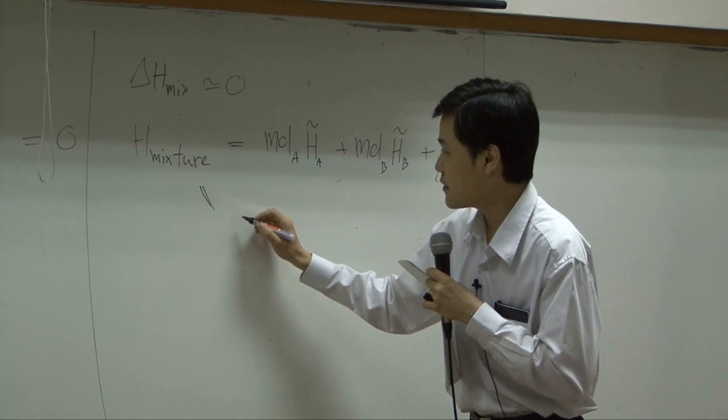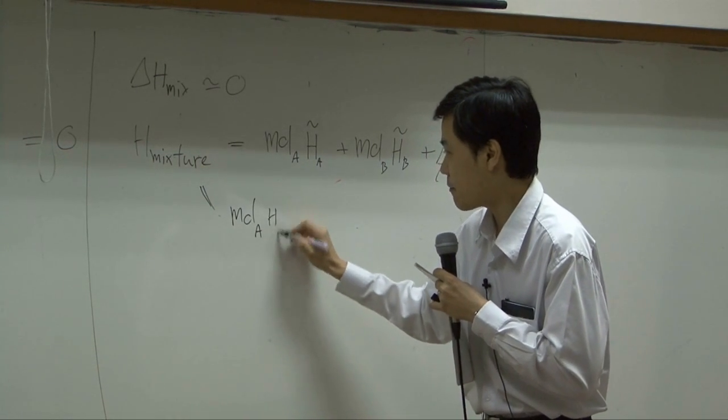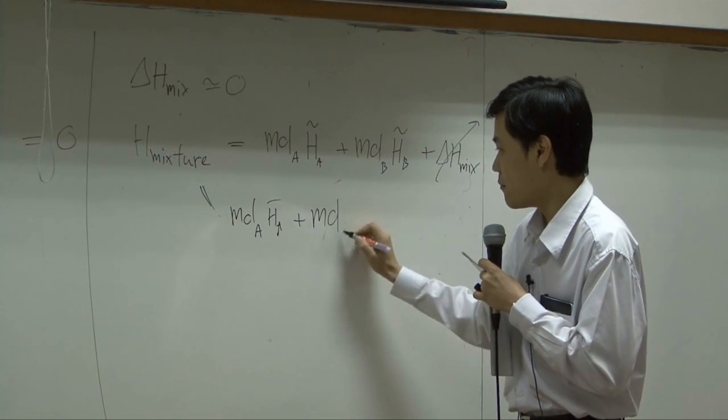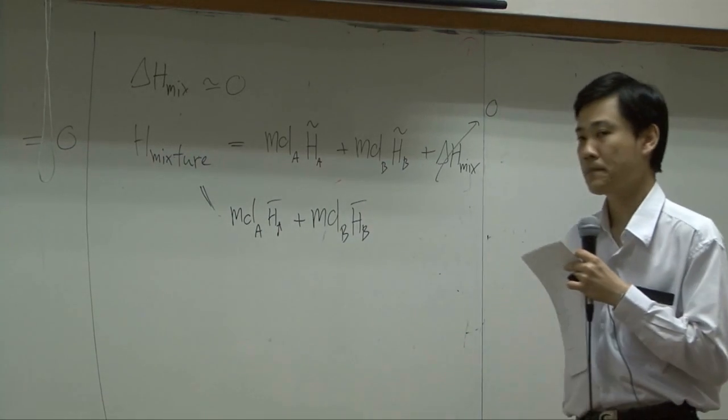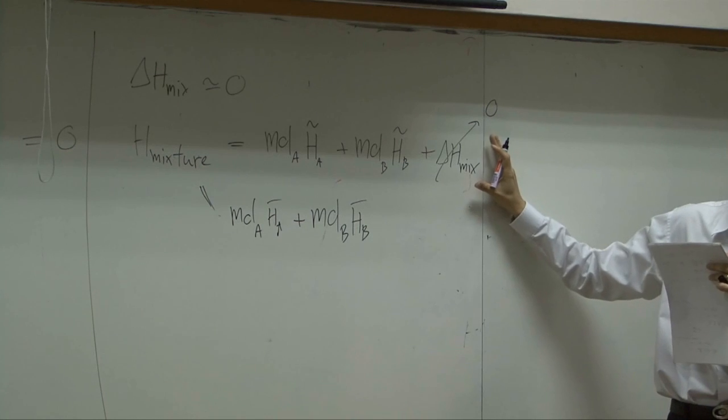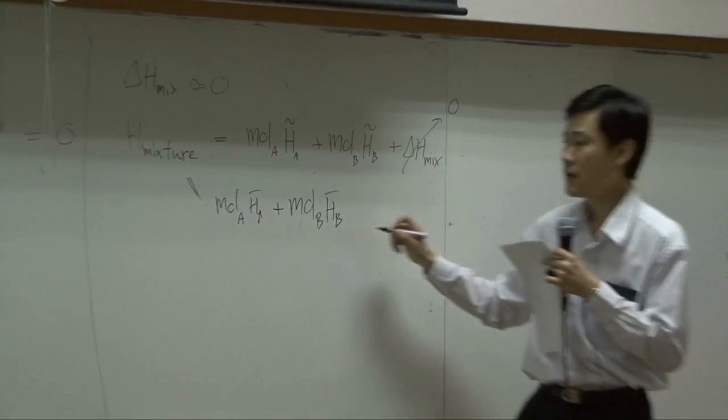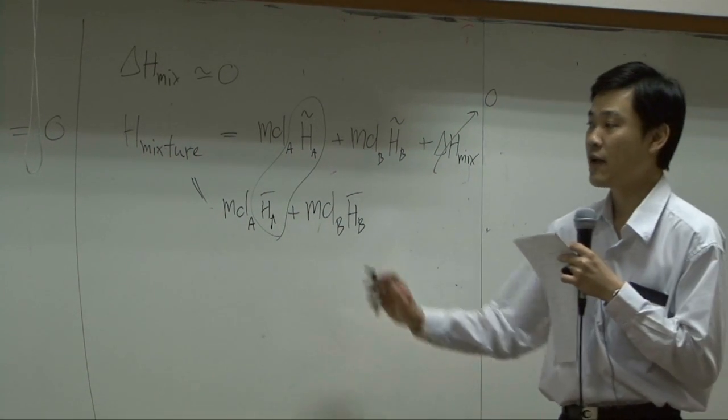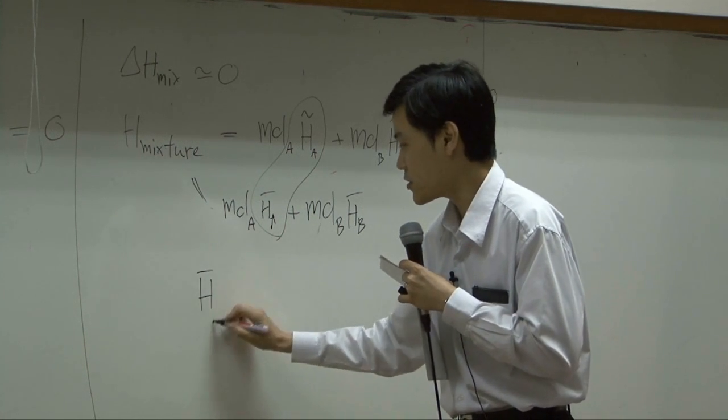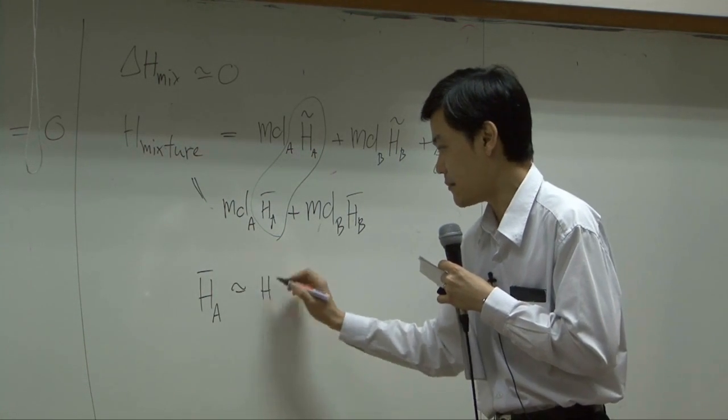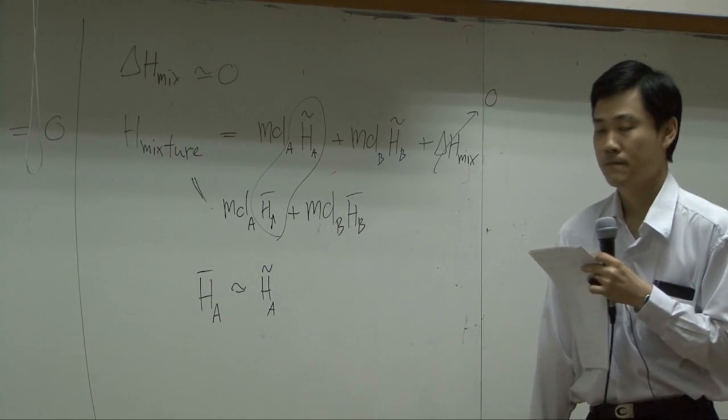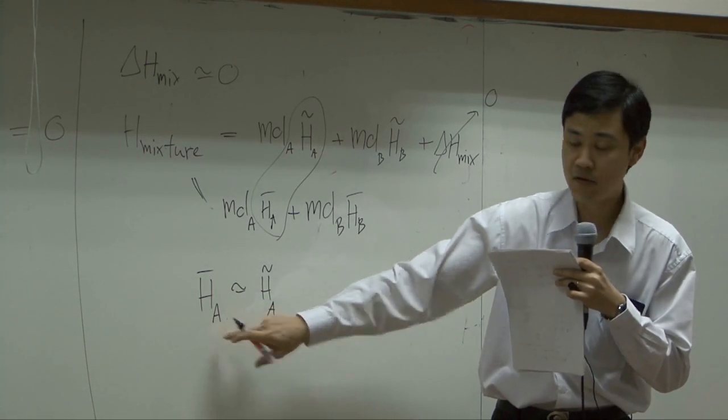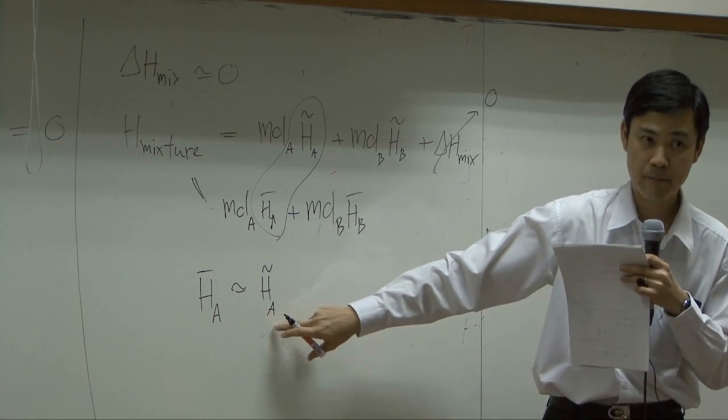This one is indeed equal to mole of A partial molar enthalpy of A added by mole of B partial molar enthalpy of B. But as long as you can take this heat of mixing to be zero, then what you have would be these two terms are approximately the same. So as long as you have ideal mixture, then partial molar enthalpy of A would be approximately the same as molar enthalpy of pure A. These two are different. This one is A as the part of the mixture. This one is A as pure species.